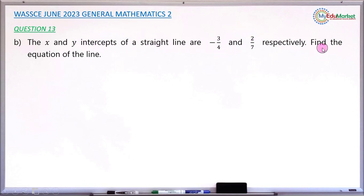So the question asks us to find the equation of the line. Let's attempt to answer this question together. We have the line that we want to write its equation, and that line crosses the x-axis and crosses the y-axis at this point minus 3 over 4 and 2 over 7 respectively. So it is that line that we want to write its equation.